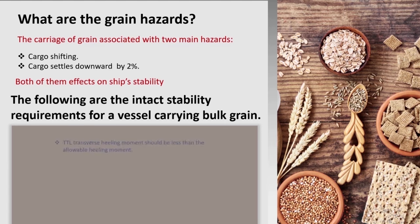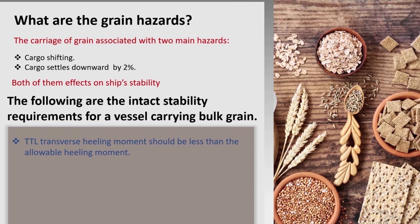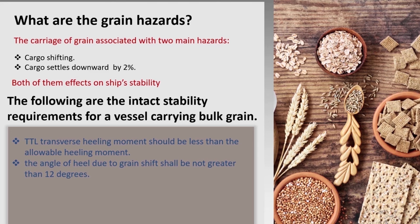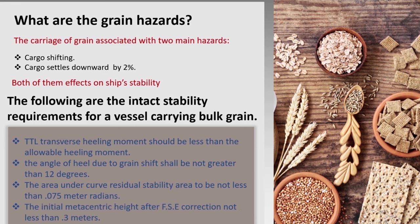There are four conditions that must be met. First condition: total transfer heeling moment should be less than allowable heeling moment. Second condition: the angle of heel due to grain shift shall be not greater than 12 degrees. Third condition: the area under the residual stability curve to be not less than 0.075 metre-radians. Last condition: the initial metacentric height after free surface effect correction not less than 0.3 metres.